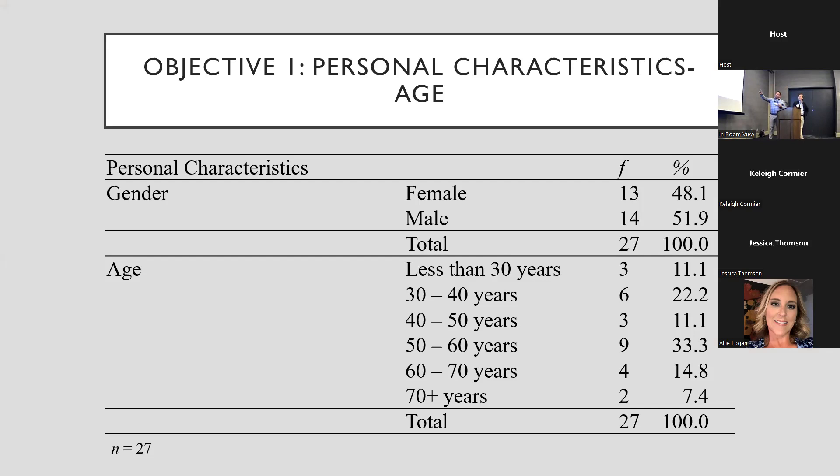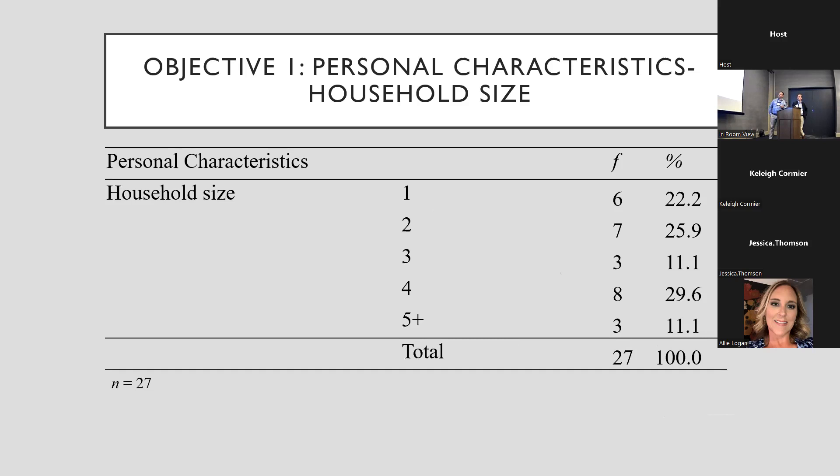Looking at results: regarding age, we tend to see a migration toward older producers — somewhat expected. An interesting characteristic is related to gender: in this study we cannot generalize due to the small population, but it was almost equally split, which is really interesting.